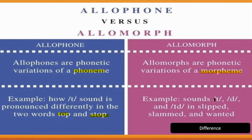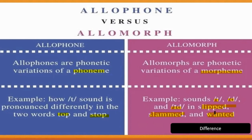Now look at the morpheme -ed. In words like 'slipped,' 'slammed,' and 'wanted,' we already know -ed is the past tense morpheme. These morphemes are having phonetic variation — and this phonetic variation in a morpheme is what we study as allomorphs.